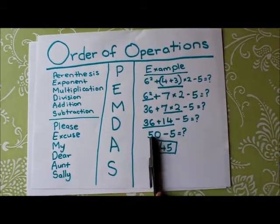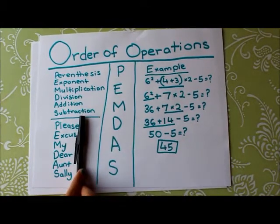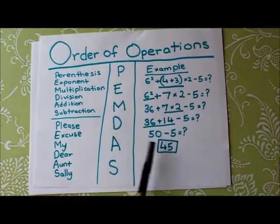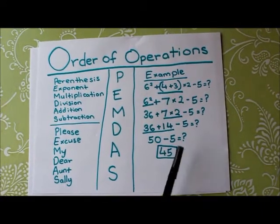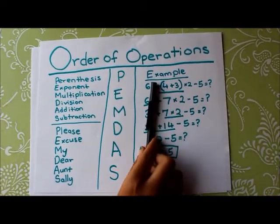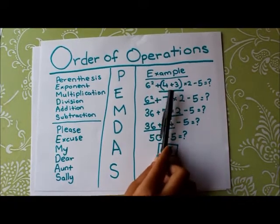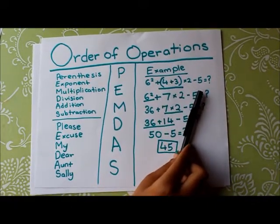So I'll do 50 minus 5. And the last operation is subtraction, and 50 minus 5 equals 45. So 45 will be the answer to 6 to the power of 2 plus in parentheses 4 plus 3 times 2 minus 5.